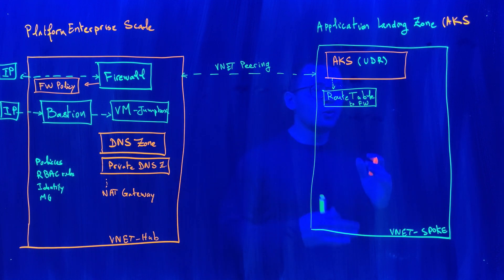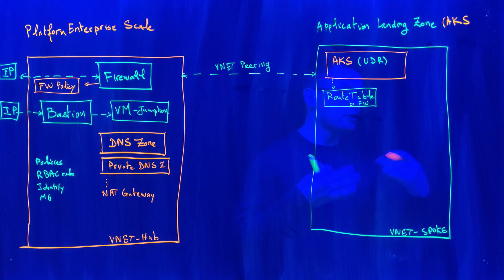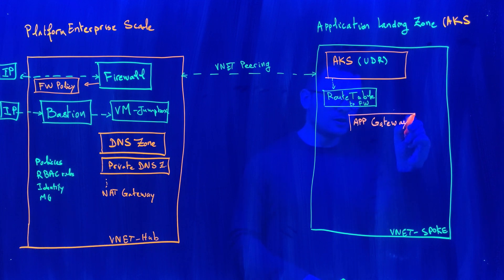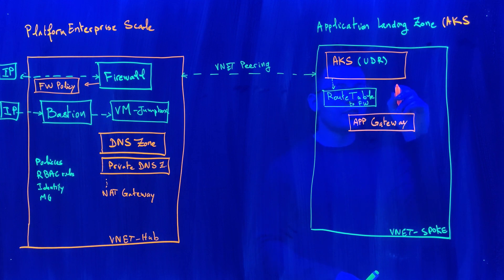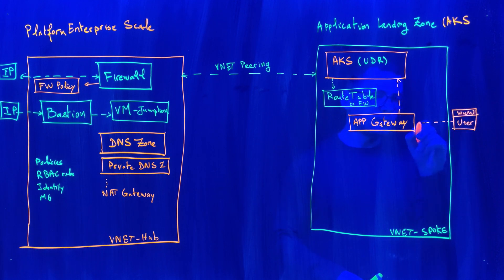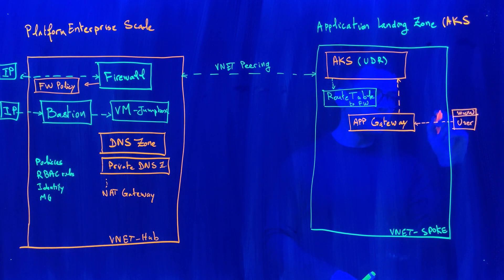The AKS cluster will expose internal services to end users through either a public or private IP address. It achieves this through an application gateway, using an ingress controller such as the nginx ingress controller or the application gateway AGIC, to get user traffic into the cluster. Users will connect to the cluster through their browsers and will reach the application gateway via its public IP address.